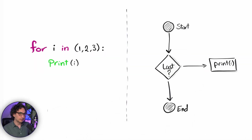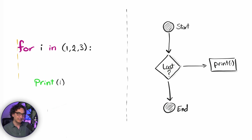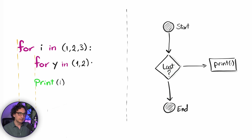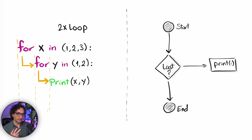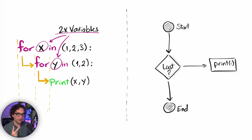We have the classical for loop — nothing fancy, we are just iterating through a sequence. In order to make a nested loop, we define a new for loop inside the first one. For example, for y in a sequence like one, two — and let's call the first variable x. With that we are iterating through two loop variables, x and y, and printing both of them.